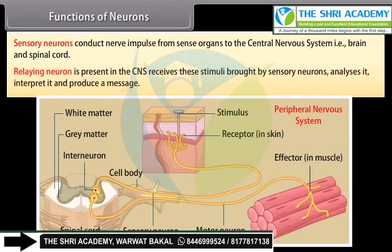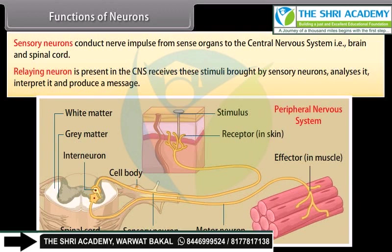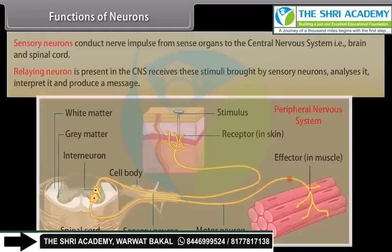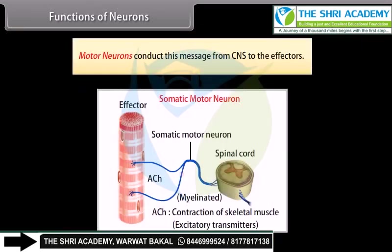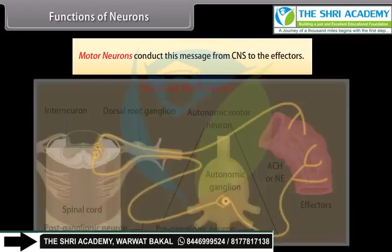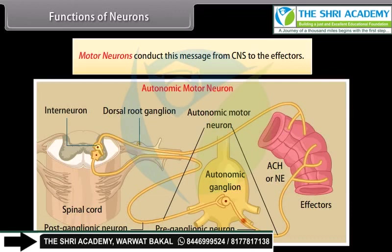The relaying neuron is present in the CNS. It receives stimuli brought by sensory neurons, analyzes and interprets them, and produces a message. Motor neurons conduct this message from the CNS to the effectors.